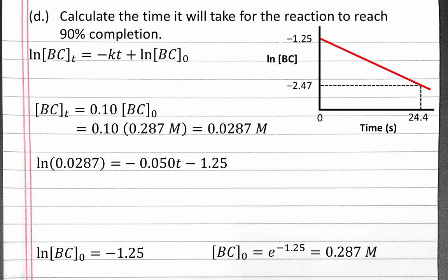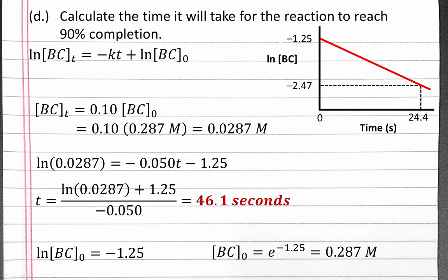We can plug this value into our integrated rate law: the natural log of our concentration at time T, when we have just 10% left, equals negative K times time, minus 1.25. Solving for time, we get the natural log of 0.0287 plus 1.25, divided by negative 0.05, which is 46.1 seconds. So at 46.1 seconds, our reaction will be 90% complete.